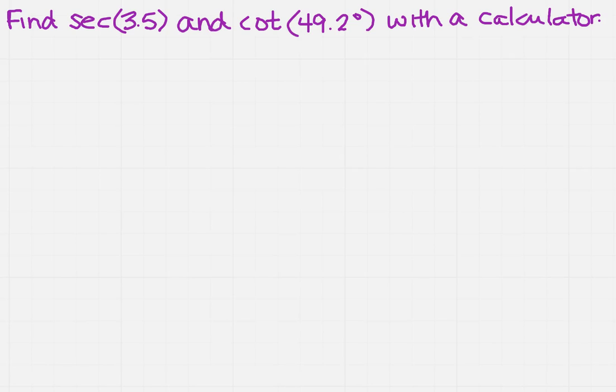We want to find the secant of 3.5 and the cotangent of 49.2 degrees with a calculator. Remember, it's really important to know if you're in radians or degrees. If you're in degrees, it has a little degree sign behind it.